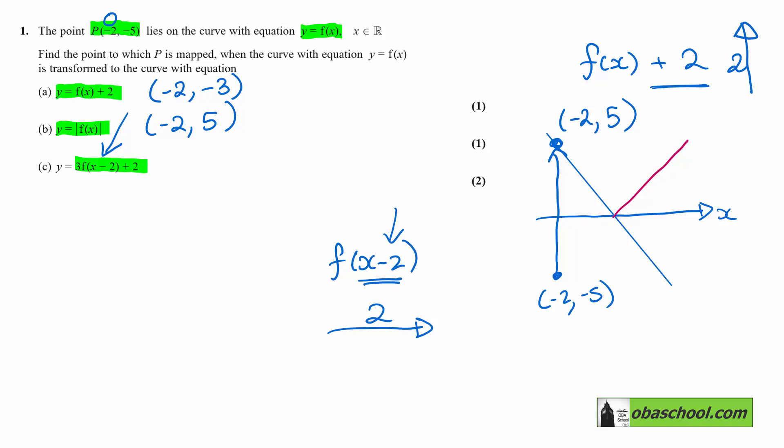The other two transformations affect the y-coordinate. The first one is the 3. 3f(x) is a vertical dilation or stretch of the curve with a scale factor of 3. What's going to happen to a y-coordinate of -5 is initially it's going to move downwards to be at -15.